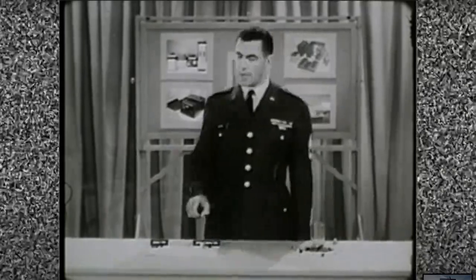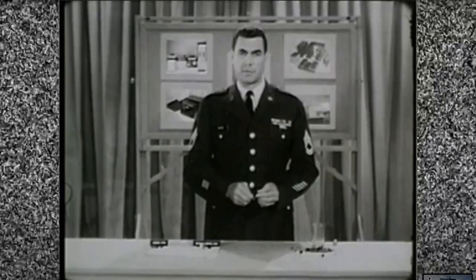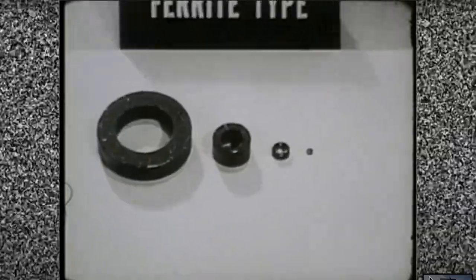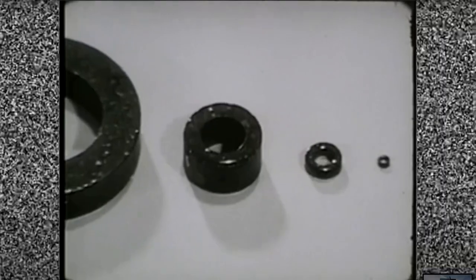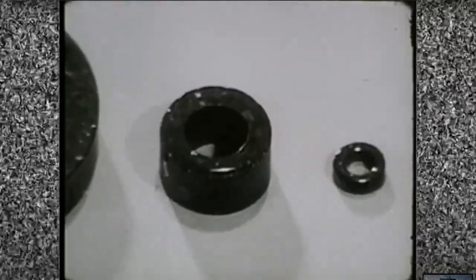Cores come in a variety of sizes and in two basic types. The ferrite type of core is molded from compounds that magnetize easily and is used to provide data processing systems with their memories.